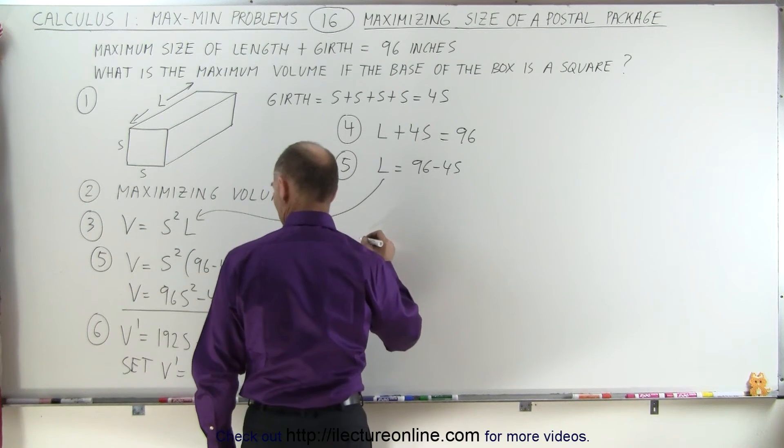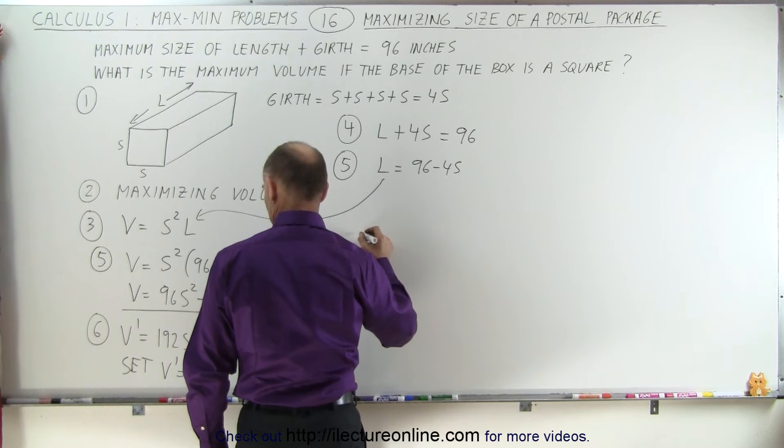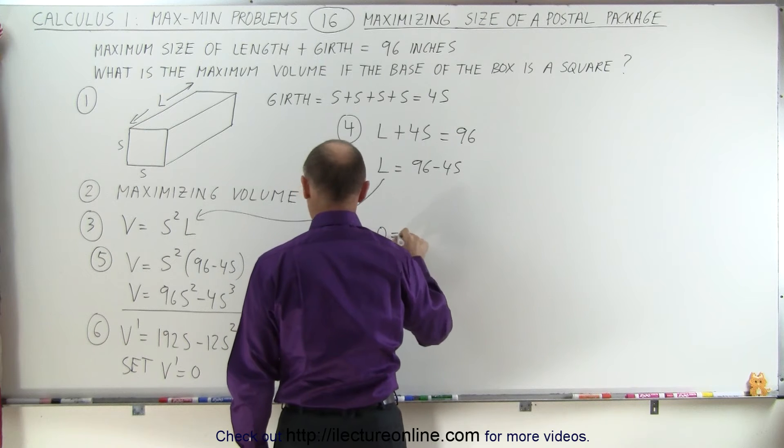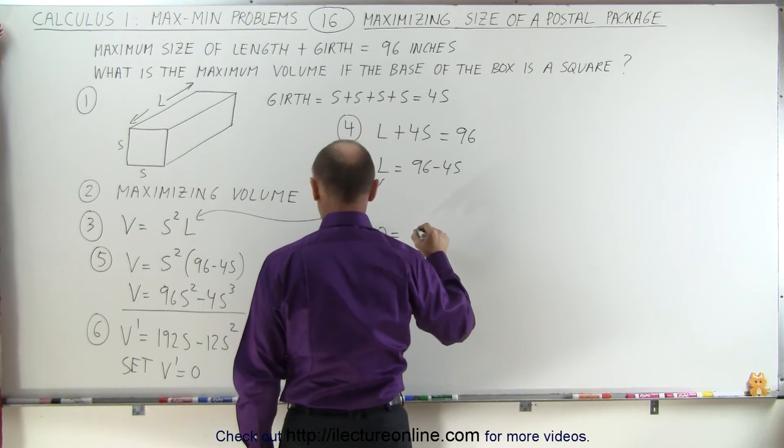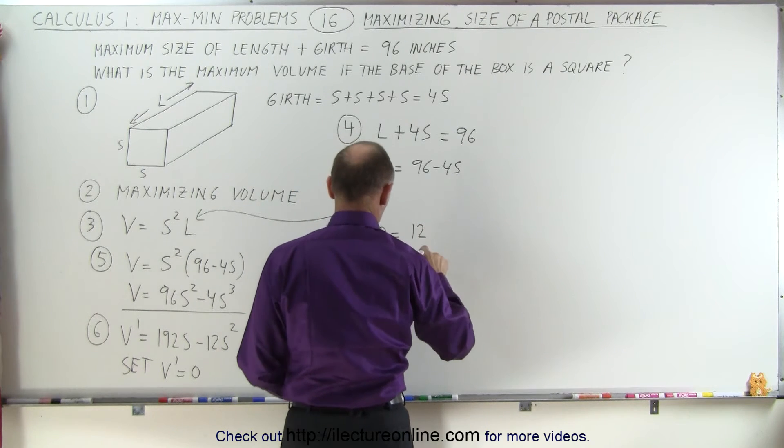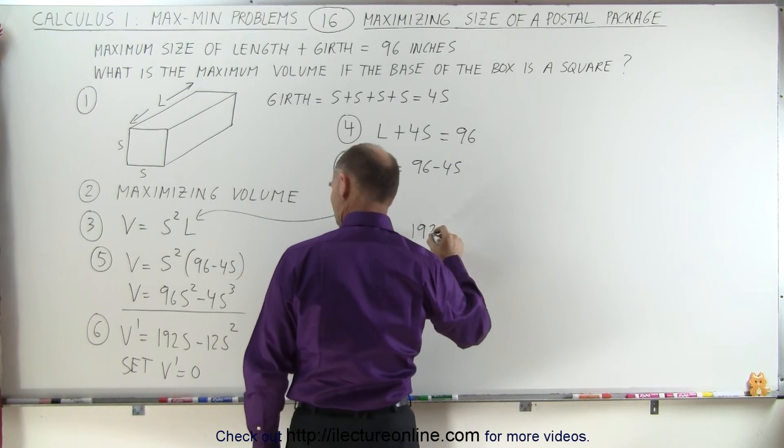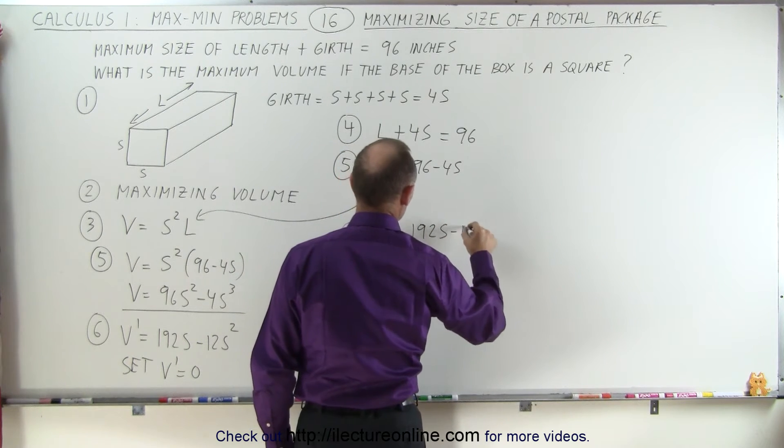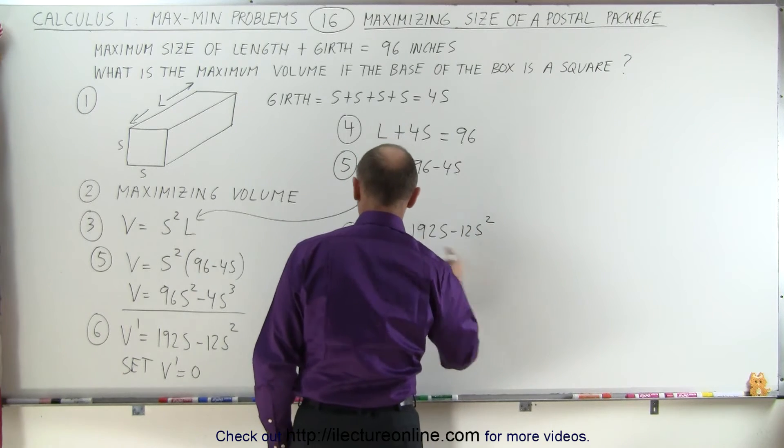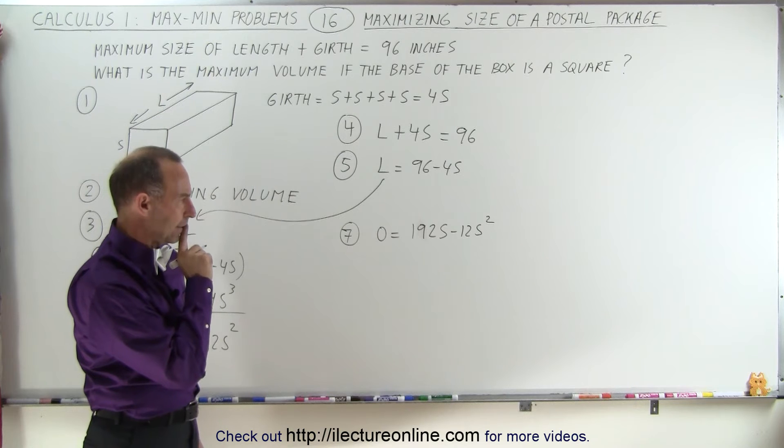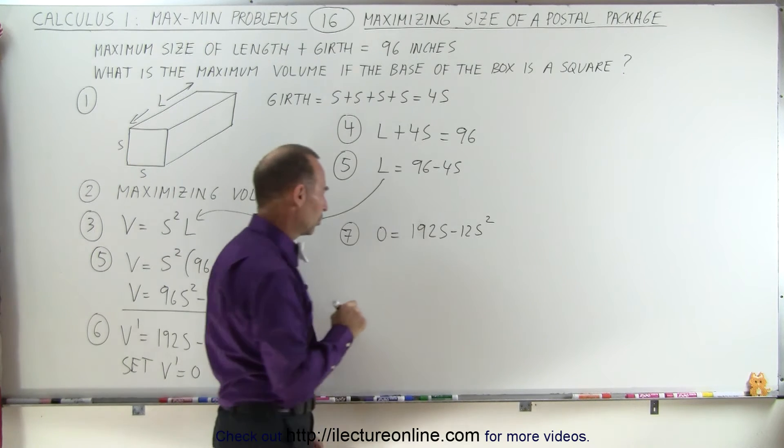That's number 7. We solve 0 = 192s - 12s² for s.